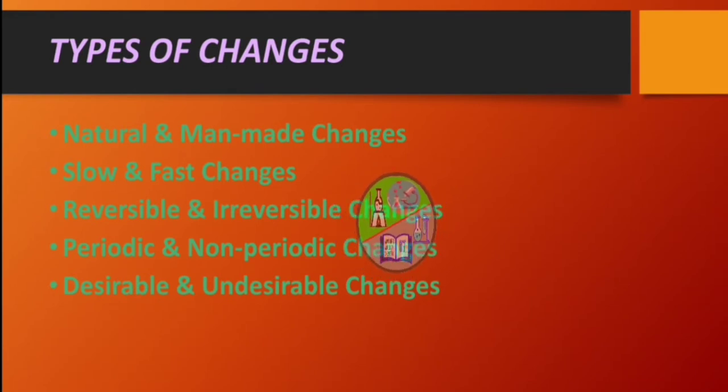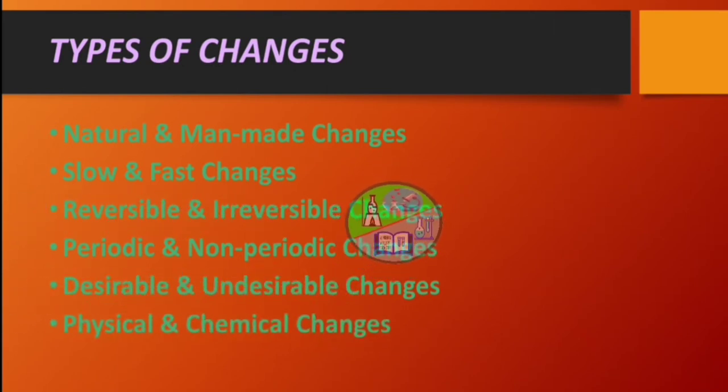And the changes that are harmful for us or which doesn't happen according to us are undesirable change. Example: forest fire, flood, etc. And finally, physical and chemical changes. Let's know about it in more details.